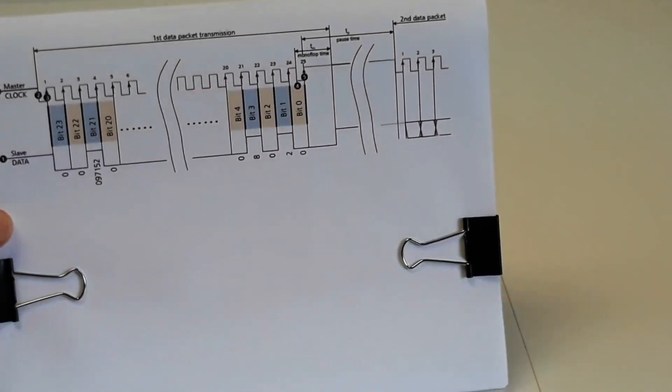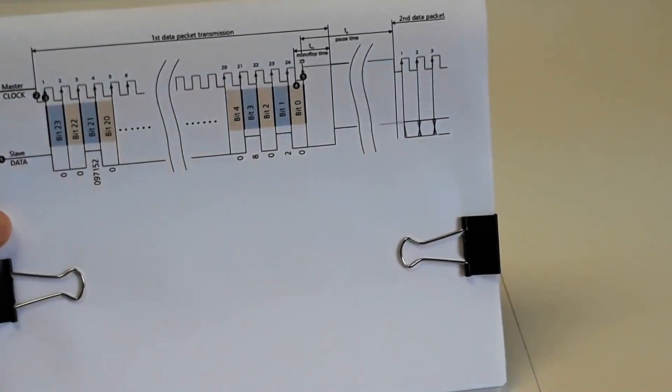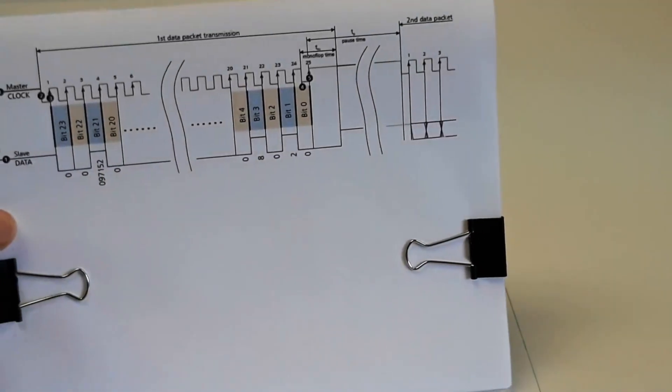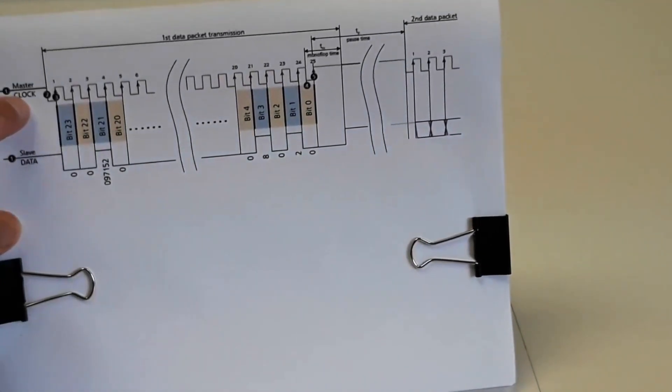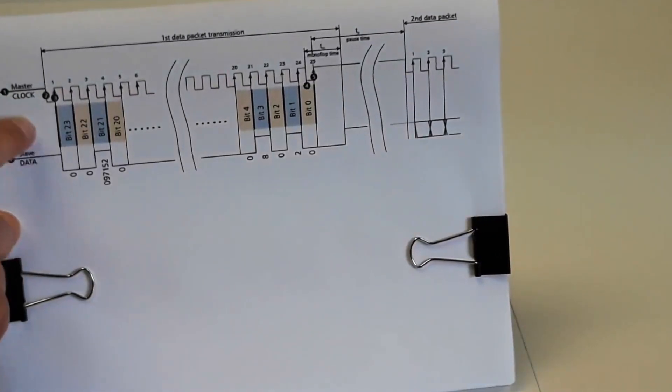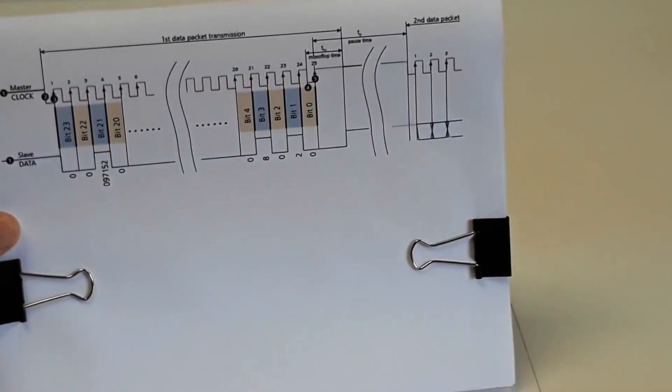SSI encoders act as a master and slave arrangement. The output consists of a pair of square waves for position with a clock input from the master and data output from the slave. The master is typically like a PLC or motor drive.